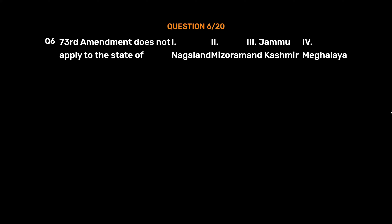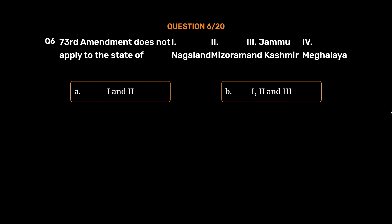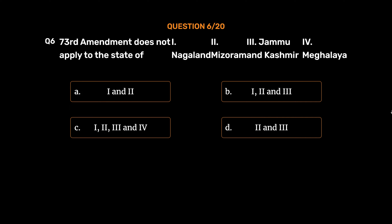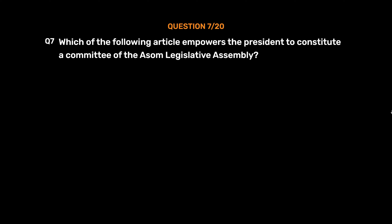Question No. 6: The 73rd Amendment does not apply to the state of — 1. Nagaland, 2. Mizoram, 3. Jammu and Kashmir, 4. Meghalaya. Option A: 1 and 2. Option B: 1, 2 and 3. Option C: 1, 2, 3 and 4. Option D: 2 and 3. The correct answer is Option C: 1, 2, 3 and 4.